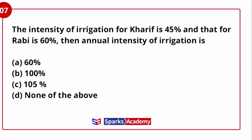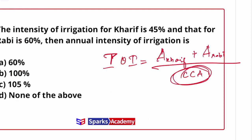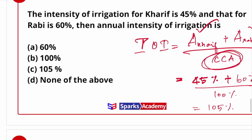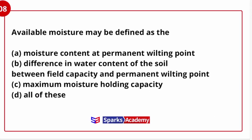Next, intensity of irrigation. For Kharif it is 45%, and for Rabi it is 60%. The annual intensity of irrigation formula is: intensity of irrigation equals area irrigated for Kharif crop plus area irrigated for Rabi crop, divided by culturable command area. So here we have 45% plus 60%, giving a total of 105%. The answer is 105%.